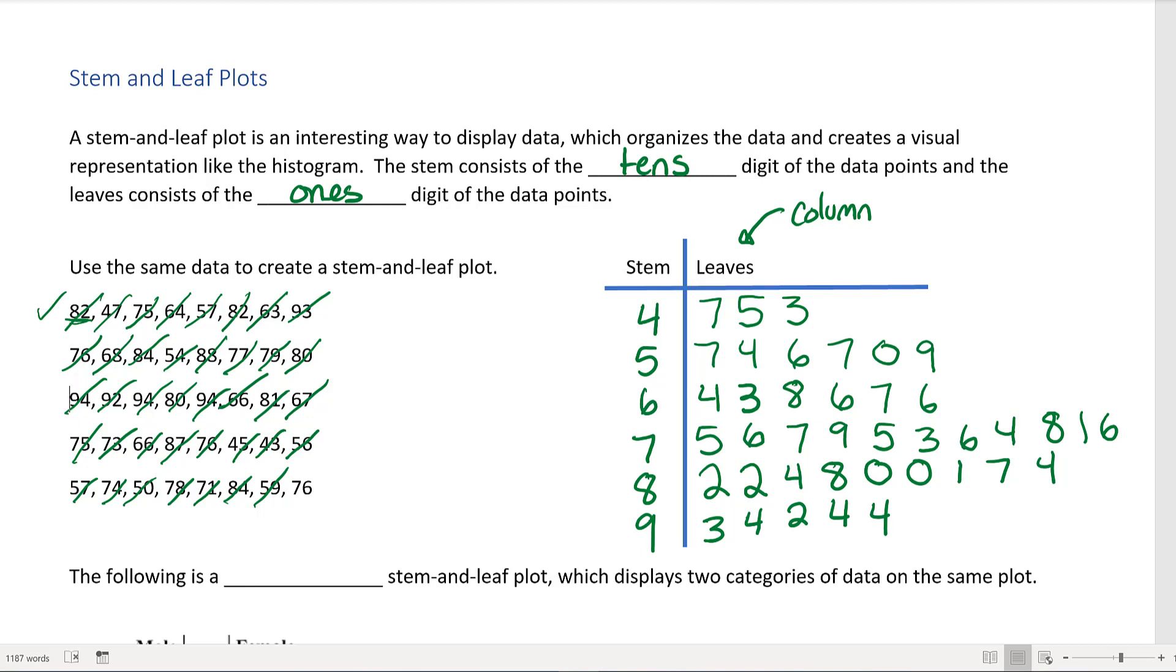Some books may have you rearrange all these values so that they're in order from least to greatest, so like for the stem 4 it would want you to do 3 first and then 5 and then 7. But this book, it doesn't really matter if you do it or if you don't do it.